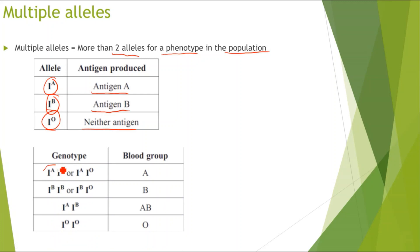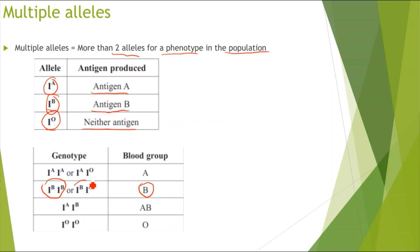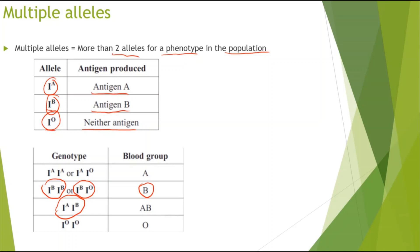If we had the genotype Iᴬ Iᴬ, we would be coding for antigen A and have blood group A. If we had Iᴬ Iᴼ, we would still only produce antigen A, giving blood group A, because Iᴼ does not code for any antigen. For Iᴮ Iᴮ or Iᴮ Iᴼ, we would only have antigen B produced, giving blood group B. For Iᴬ Iᴮ, because both are codominant and equally expressed, we produce both antigen A and antigen B, giving blood group AB. Finally, with genotype Iᴼ Iᴼ, neither allele codes for any antigen, so we have blood group O.